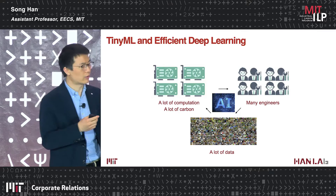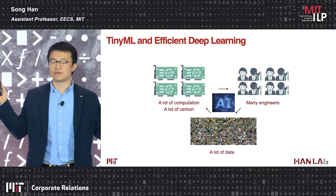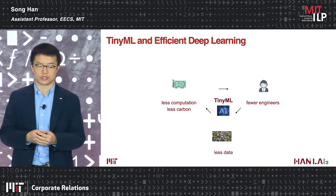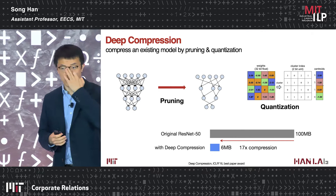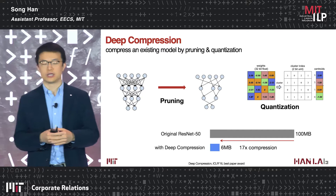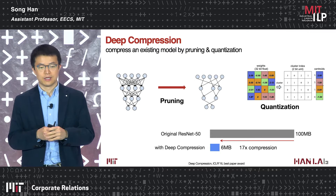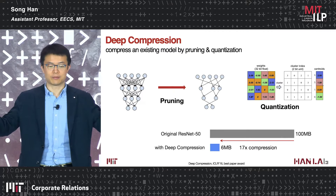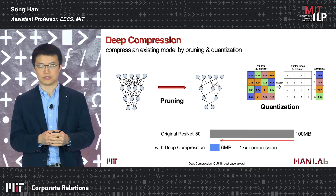This is our effort on TinyML: rather than using a lot of computation and engineering effort with large training datasets, we want less computation, less carbon emission, deployment on small edge devices with fewer engineers and less data. Our first effort is called deep compression, where we compress a neural network by pruning and quantization. By pruning, we can remove redundant connections — 9 to 13 times — without losing accuracy, and further quantize to 4 or 8 bits.